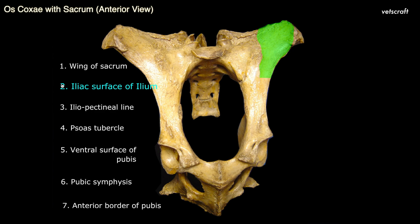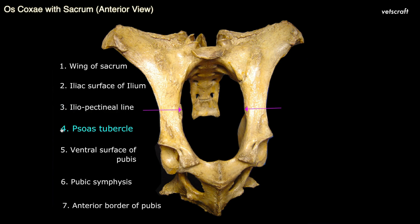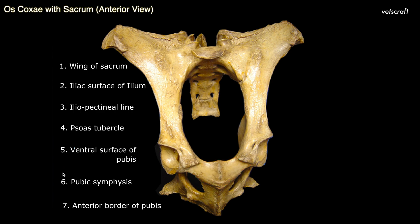The iliac surface is covered by the iliacus muscle in life. The iliopectineal line, indicated by arrows, separates the sacral surface from the iliac surface. Psoas tubercles are two small prominences about the middle of the iliopectineal line on which the psoas minor muscle is inserted. The ventral surface of the pubis is slightly convex and smooth.